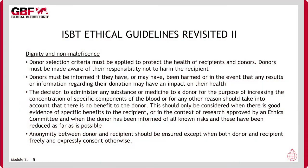Looking first at autonomy, we can see that this deals with issues around consent and confidentiality. The required information is generally provided by means of a form to be signed by the donor. Autonomy may need to be considered slightly differently for those giving for the benefit of family or friends. These donors may feel their freedom to not donate is significantly reduced.